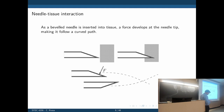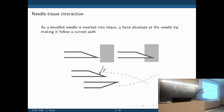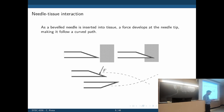Now let's see how we can make sure the needle reaches the intended target. Most of these needles have a bevel — the tip is cut on an angle. The reason is simple: we want to make sure it cuts through the tissue as it is inserted. We want an instrument that is very sharp and will easily cut through the tissue. But there is a problem with that bevel.